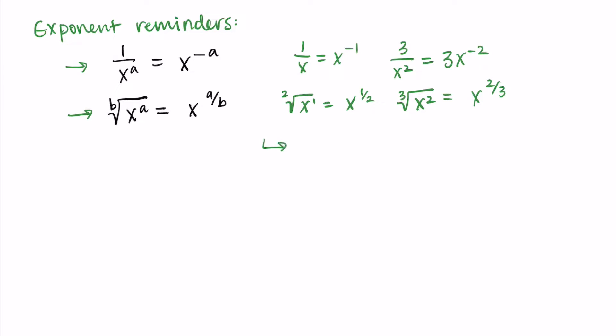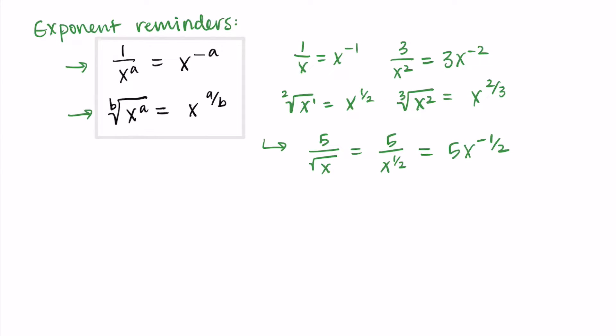Putting both rules together: five over the square root of x is five over x to the one-half, and bringing the x out of the denominator gives us five x to the negative one-half. Let's carry these exponent reminders with us as we start doing some derivatives.